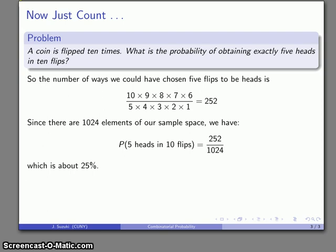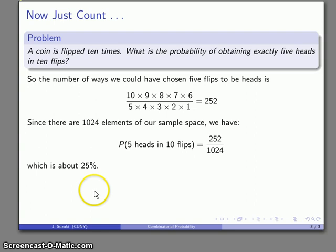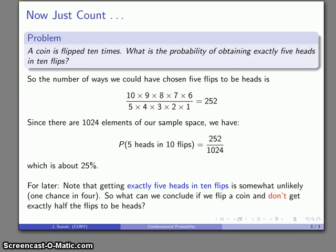Now, go back to that intuition question, which is, did you think that the probability of getting exactly five heads would be high or would it be low? And here we see that it's about 25%, so it's not particularly low, but at the same time, it's not particularly high. And this leads to a question that is worth thinking on for later.